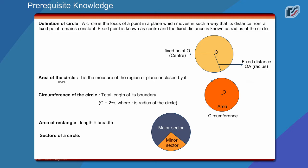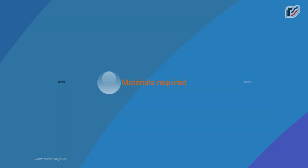Area of the circle: It is the measure of the region of plane enclosed by it. Circumference of the circle: Total length of its boundary, C equals 2 pi r, where r is radius of the circle. Area of rectangle: Length into breadth. Sectors of a circle.